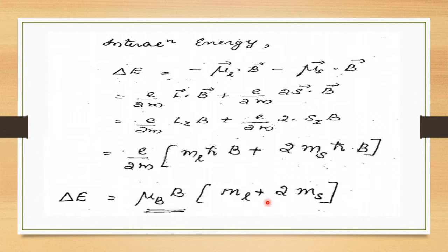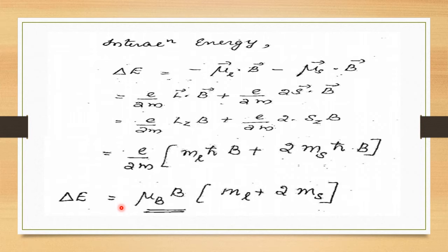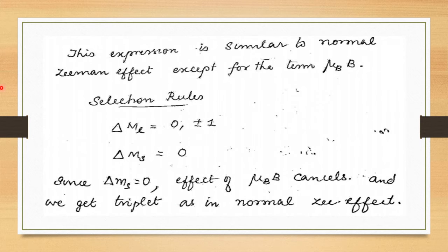Taking μB and B outside, the interaction energy becomes ΔE = ml·μB·B + 2ms·μB·B. The term ml·μB·B corresponds to the normal Zeeman effect, and the extra term is 2ms·μB·B.